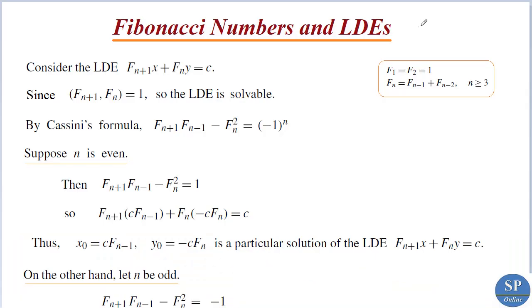We know a linear Diophantine equation has the form ax plus by equal to c. Now consider a linear Diophantine equation of this form: fn+1 times x plus fn times y equal to c, where fn is the nth Fibonacci number and fn+1 is the (n+1)th Fibonacci number.